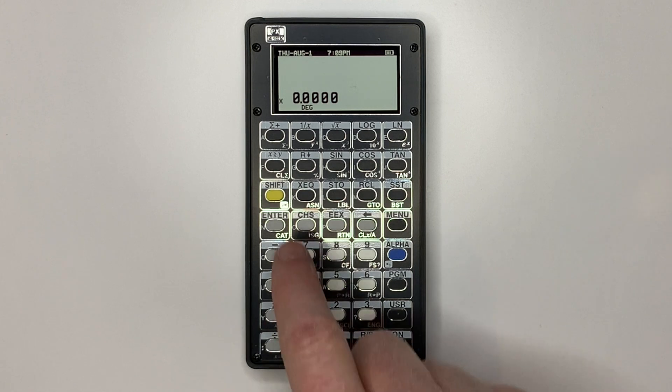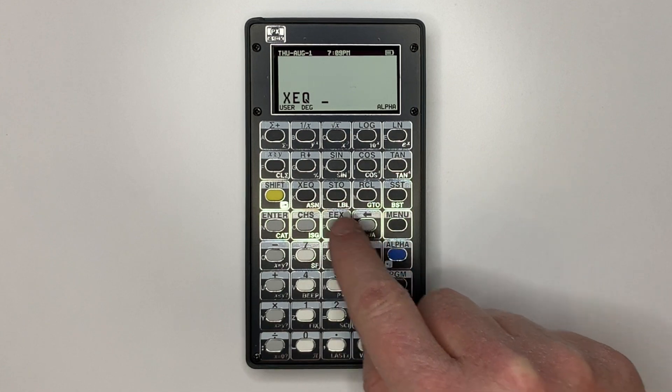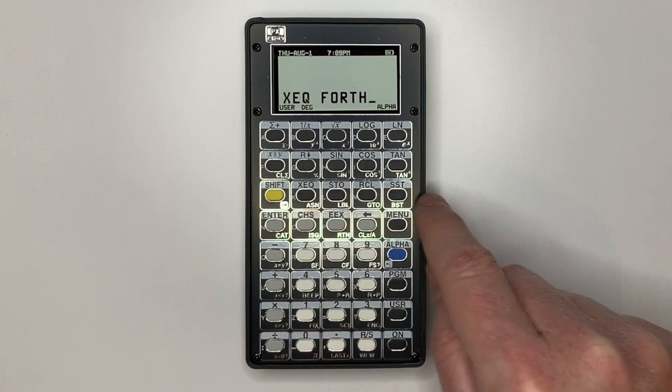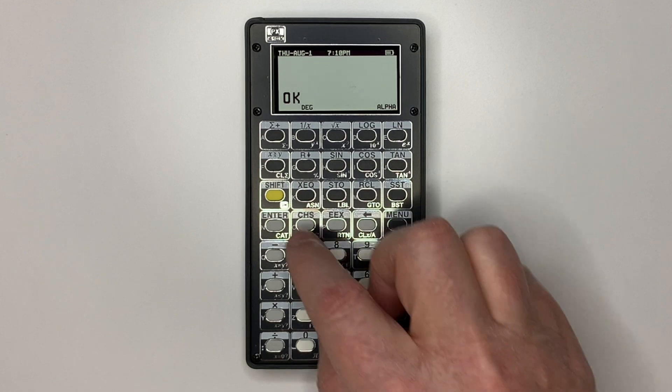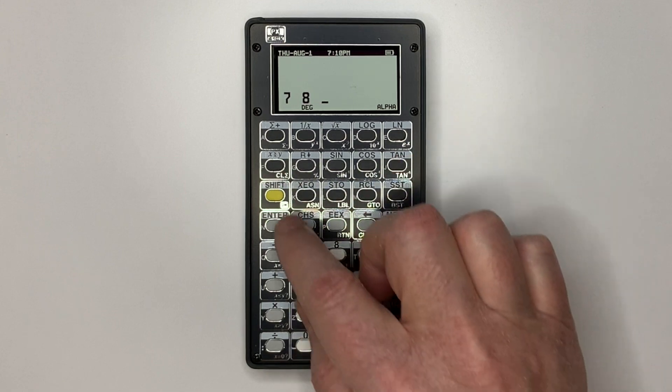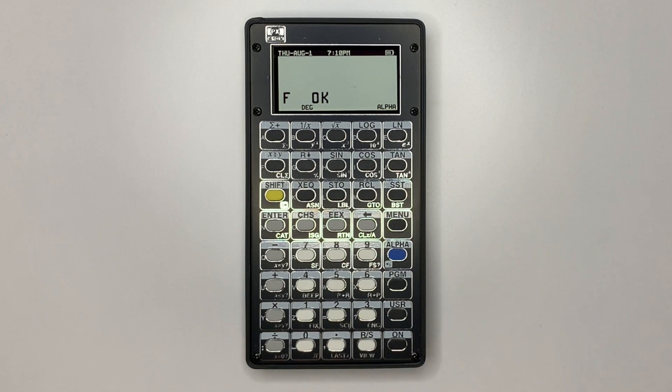Looking in the catalog, we can see Forth is there. We execute Forth. By default, Forth is in hex mode. If we enter two numbers, plus, print the results, and run, we get F.